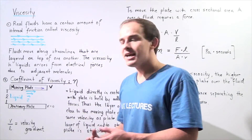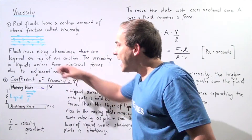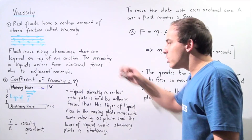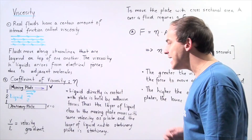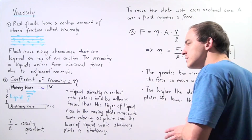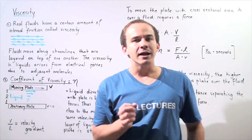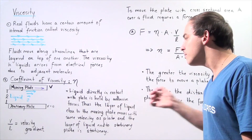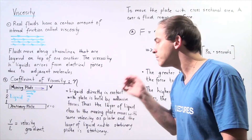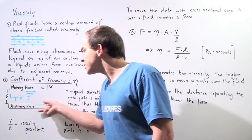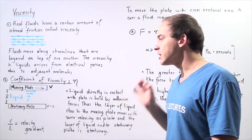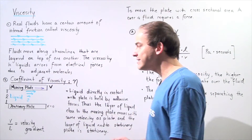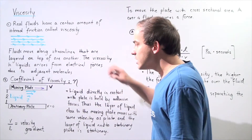Let's suppose we have a solid stationary plate on one side and a moving plate on the other side, and between these two plates we have some sort of liquid. The liquid directly in contact with the plate is held together by adhesive forces between the molecules in the liquid and the molecules in that solid. So the layer of liquid close to the moving plate moves with the same velocity as that moving plate, and the liquid in contact with the stationary plate is also stationary.